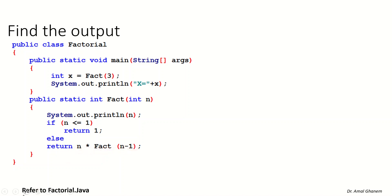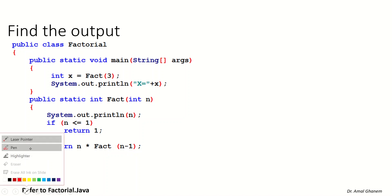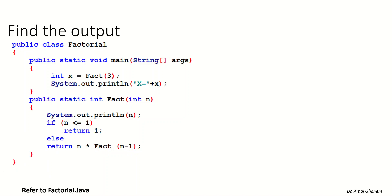Here is why we call it a recursive method — because the method itself calls itself. So if the value of n initially is 5, we will send 4, then 3, and so on. We keep calling the method until we reach the value of 1, which will be the last call.